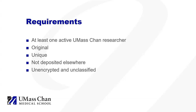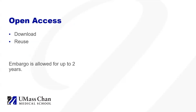Finally, your data must be unencrypted and unclassified. This means your data cannot contain any private, confidential, or legally protected information. We encourage you to contact a librarian for assistance in locating a repository which can accept data with personal identifying information or other confidential information. The e-Scholarship at UMass Chan data repository is an open access repository, meaning all data is available for anyone to download and reuse. You can request an embargo on your data of up to two years, which would prevent the release of your data during the embargo period.